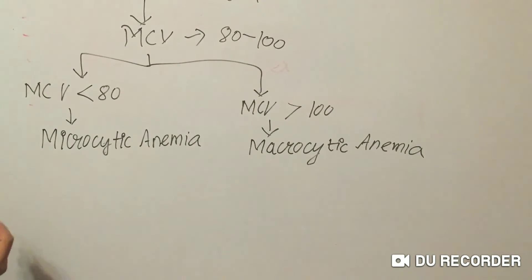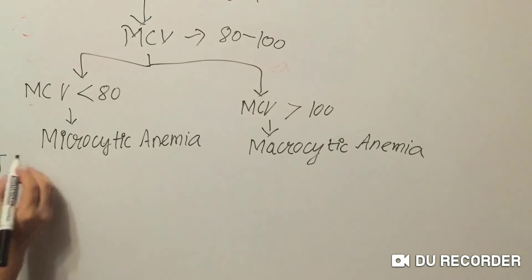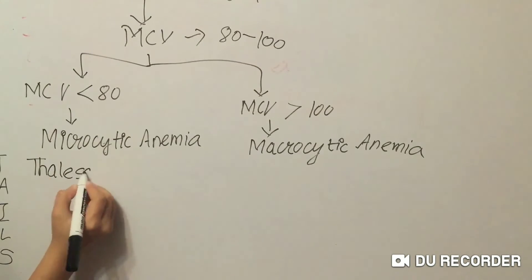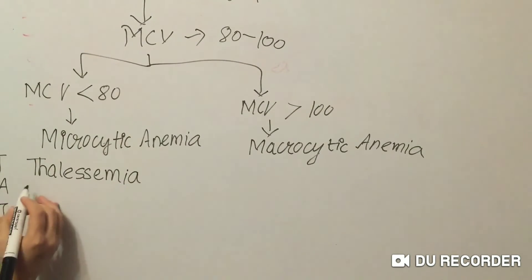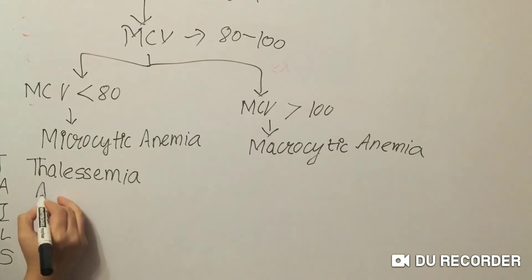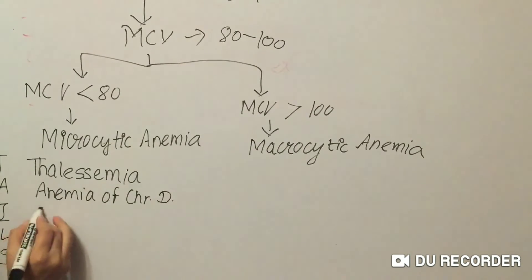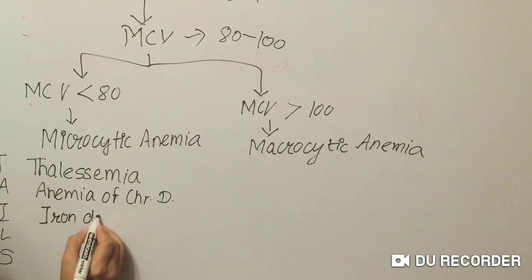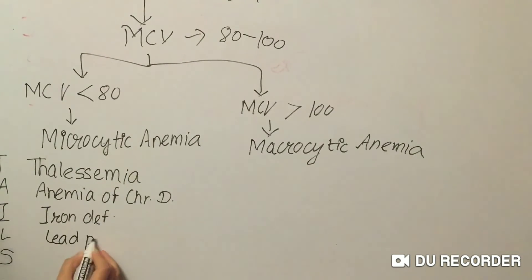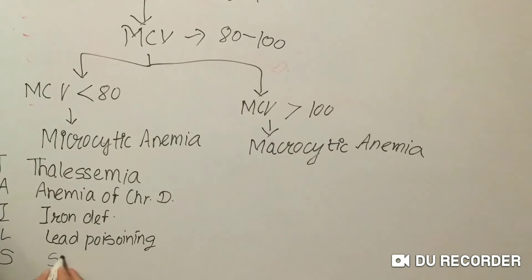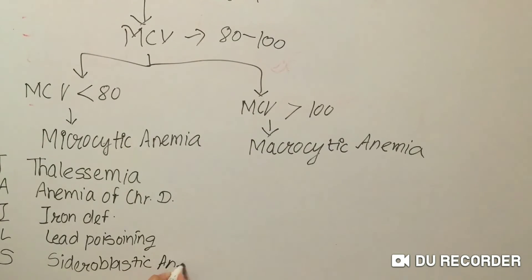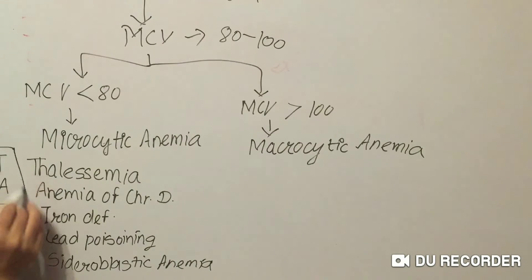Microcytic anemia includes: T — thalassemia, A — anemia of chronic disease, I — iron deficiency anemia, L — lead poisoning, and S — sideroblastic anemia. You can remember these by the mnemonic TAILS.